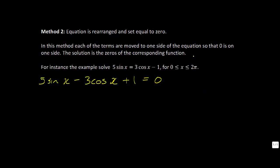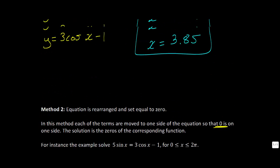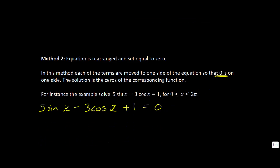And so this one's going to be a little bit different because what we're going to do is in this method each of the terms are moved to one side of the equation so that 0 is on one side. And then what we're going to do is we're going to look at where this function crosses the x-axis. And what you'll see when we go over to Desmos in a second is that our answers will be the same as what we had up here when we found that we had 0.37 and 3.85.